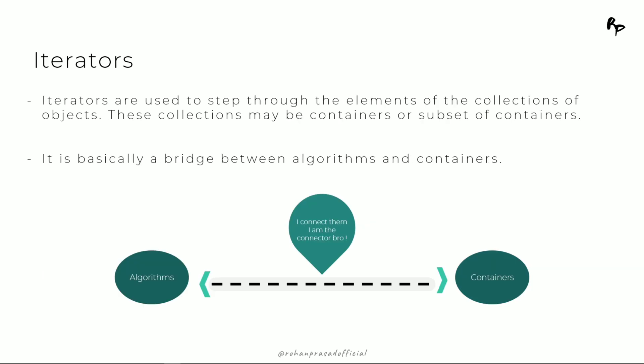Algorithms cannot directly act upon containers, so we have iterators for that. As the name suggests, an iterator just iterates through the elements of the container and performs certain operations. An iterator is basically the bridge between the algorithms and containers — nothing more.